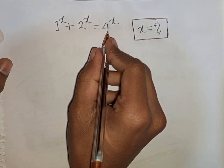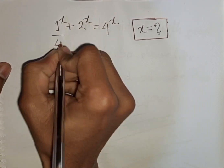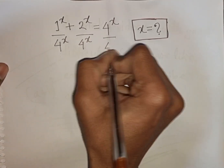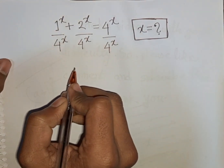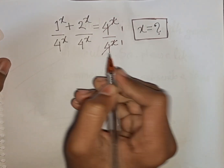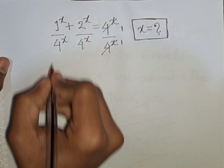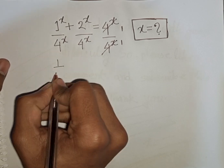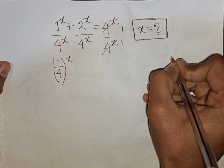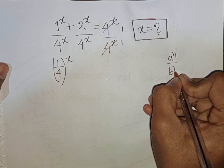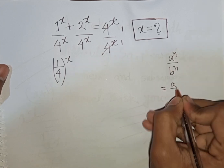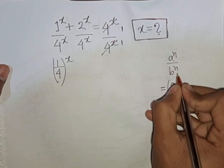First, we divide both sides by 4 power x. Now, 1 power x divided by 4 power x means it will be (1 over 4) bracket power x, according to the formula: a power n over b power n is equal to (a over b) bracket power n.